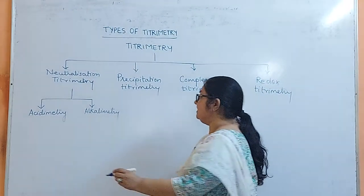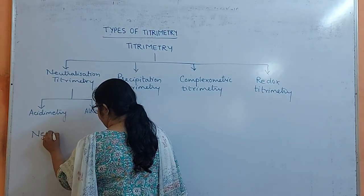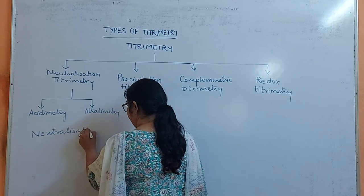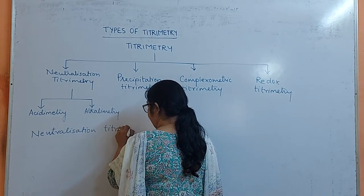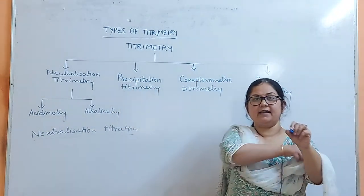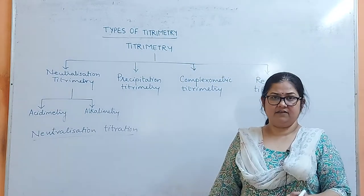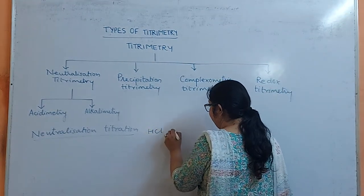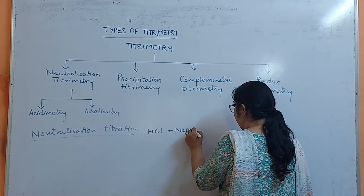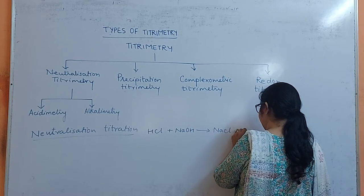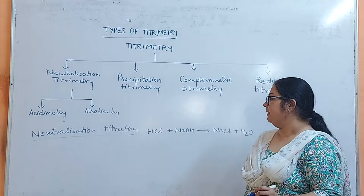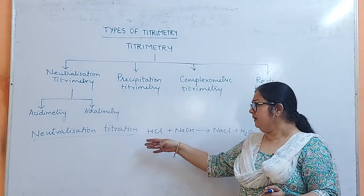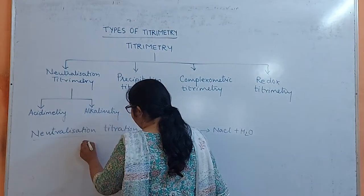Moving on to neutralization titrations: a neutralization reaction is a reaction in which acid reacts with base or vice versa to form salt and water. For example, HCl reacts with NaOH to form NaCl plus H2O. This is a neutralization reaction. Here acid reacts with base to form salt and water, and the indicators used are acid-base indicators.